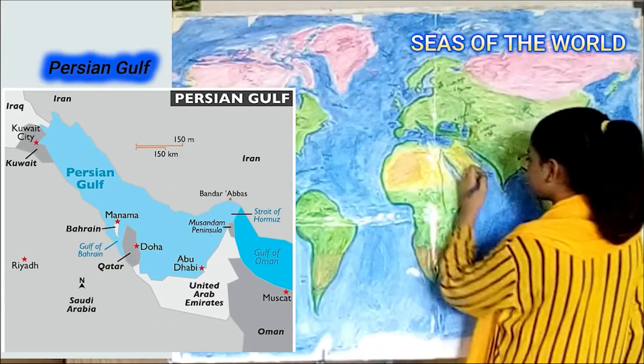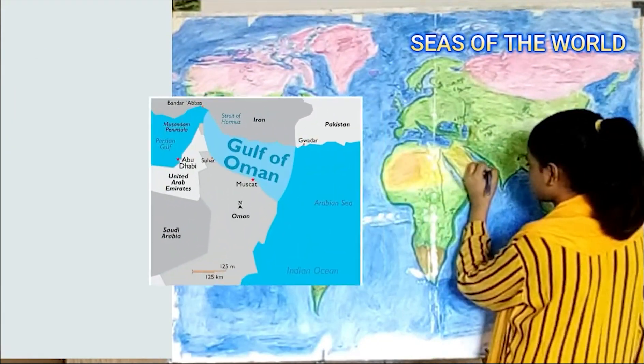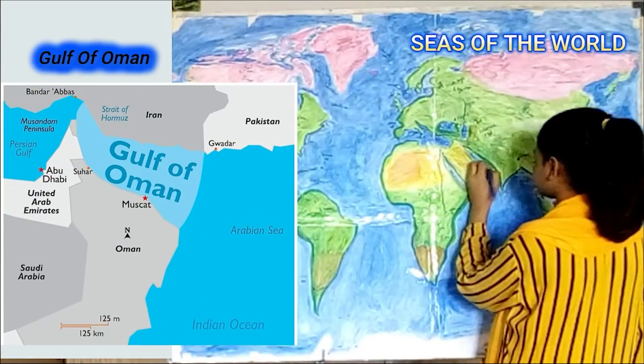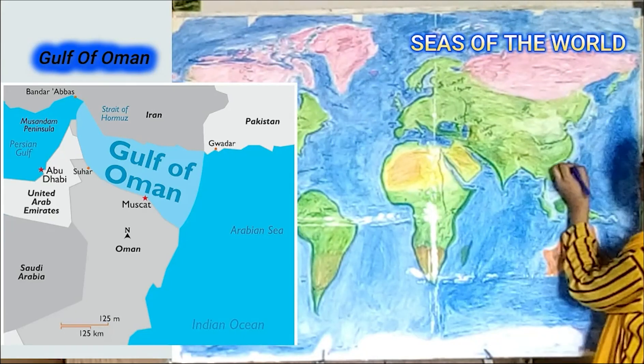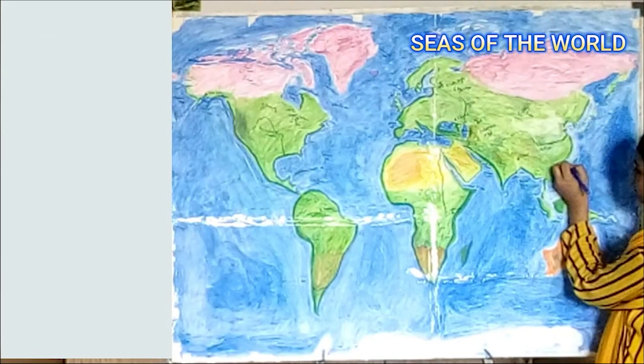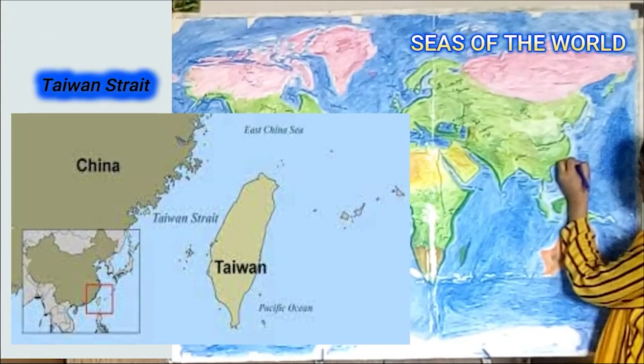Here is the Gulf of Oman. Here is Khaimani Strait. Hope you all learned everything. If you have any questions regarding this topic, feel free to ask me in the comment section below. I will see you in the next video. Thanks for watching and Allah Hafiz.